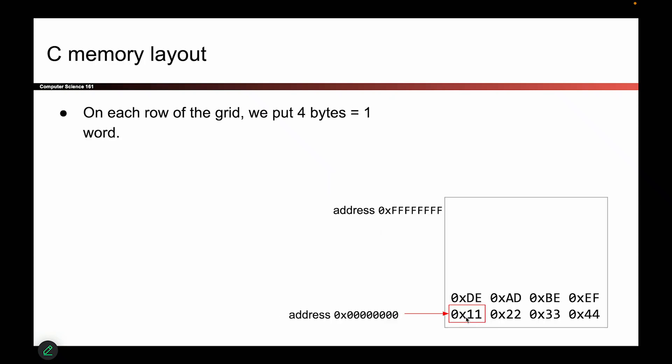So remember from before, we had that nice two-dimensional grid where we can store memory. It's technically just a one-dimensional array, but we drew it as a two-dimensional grid to look nice. And we said that every row of this grid fits four bytes. So here's a byte, here's another byte, and so on. And each byte has a unique address in memory. So when you put something in that big array of memory, it has a unique address.